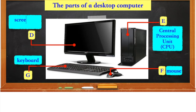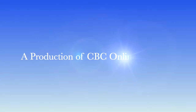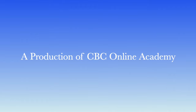The part labelled D is the screen, also known as the monitor. The part labelled G is the keyboard. The part labelled F is the mouse.